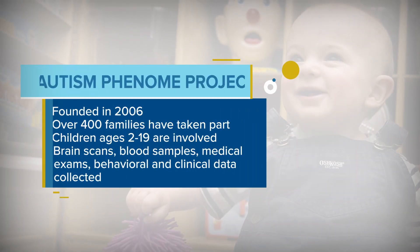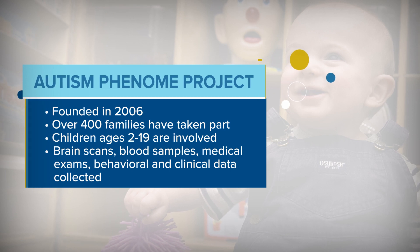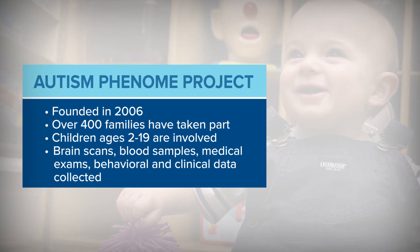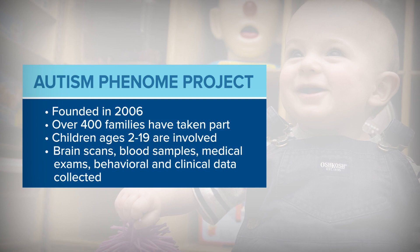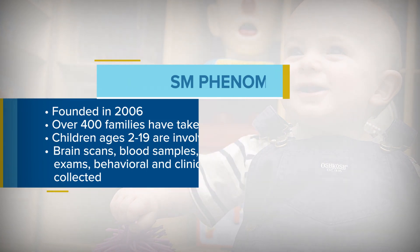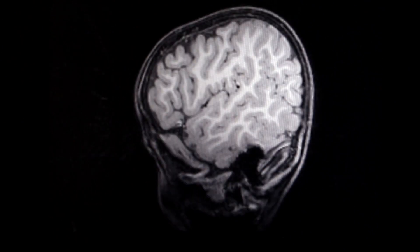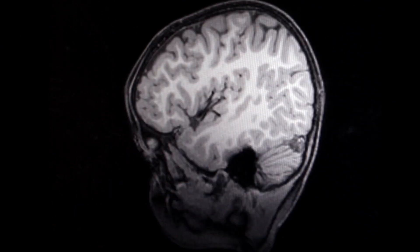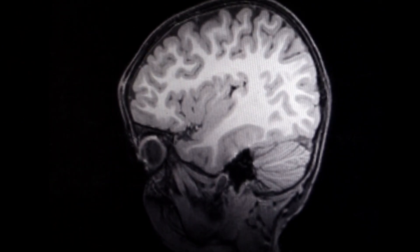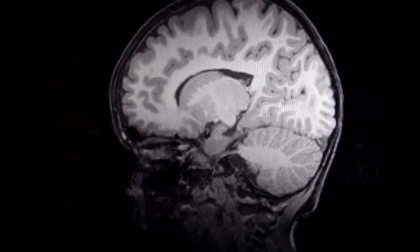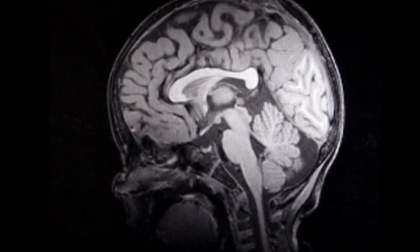The APP has collected really comprehensive behavioral data and diagnostic information. We do medical exams on the children, we draw their blood so that we can look at immune factors and genetic factors. We also do MRI scans, and we have an EEG component to the APP as well. So we get this really comprehensive picture of what's going on in every child with autism.